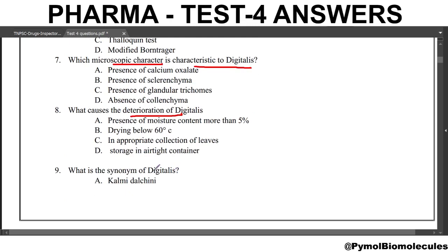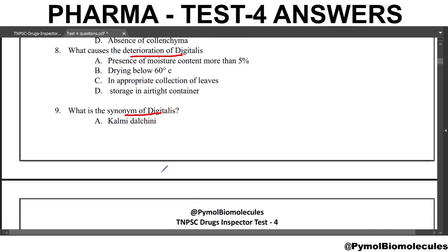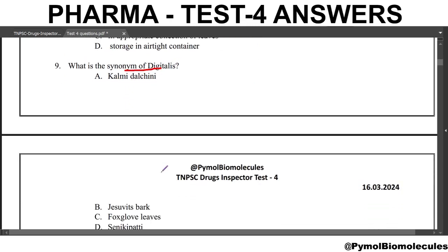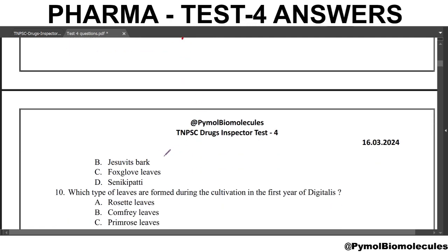What is the synonym of digitalis? Option A, Kalmi Dalchini, is the synonym of Cinnamon. Jesuit's bark is for Cinchona. Foxglove leaves is the answer for this question. And Sineki Patti will be for Senna.